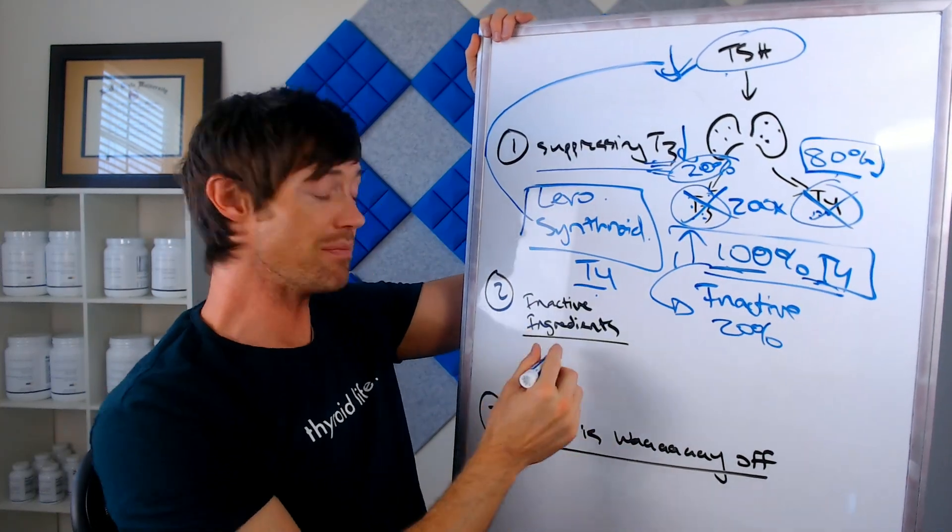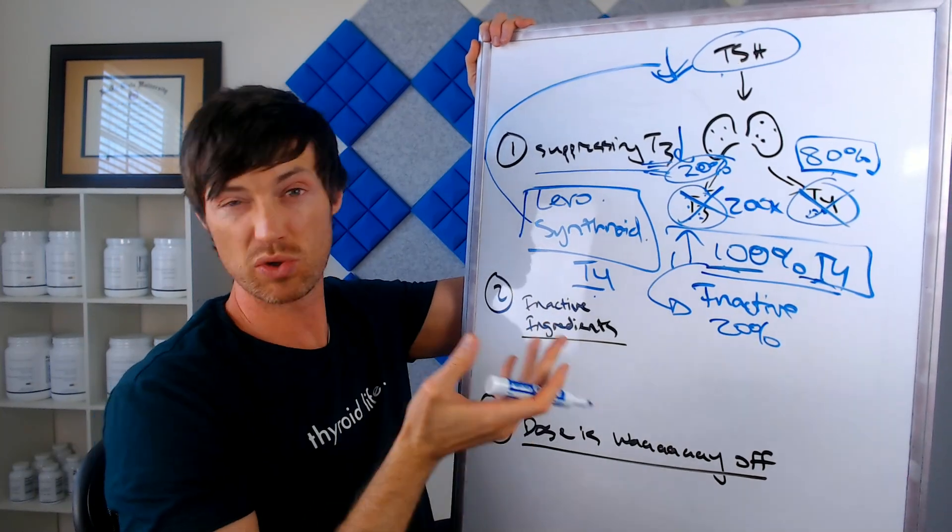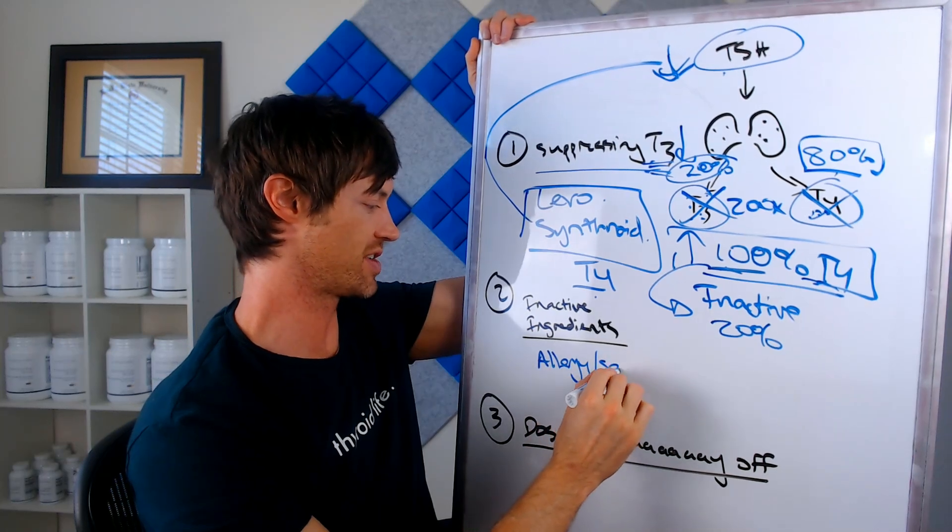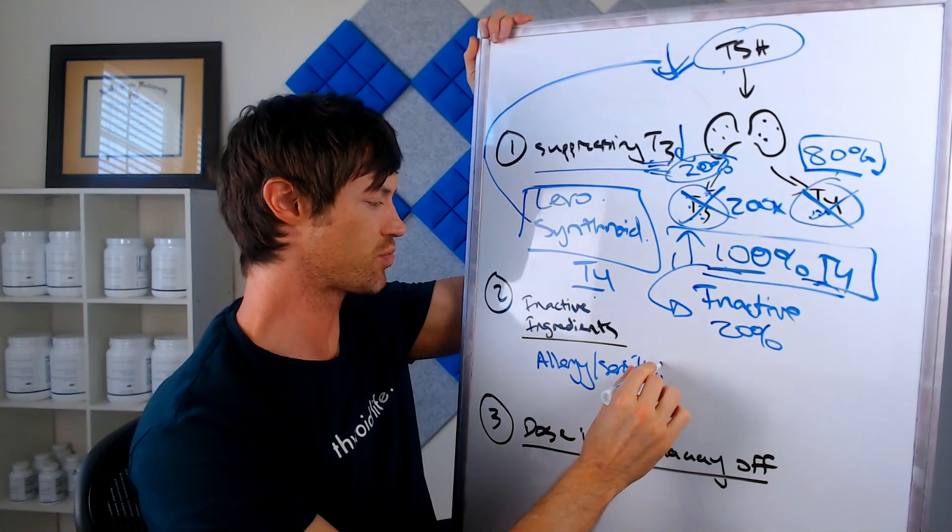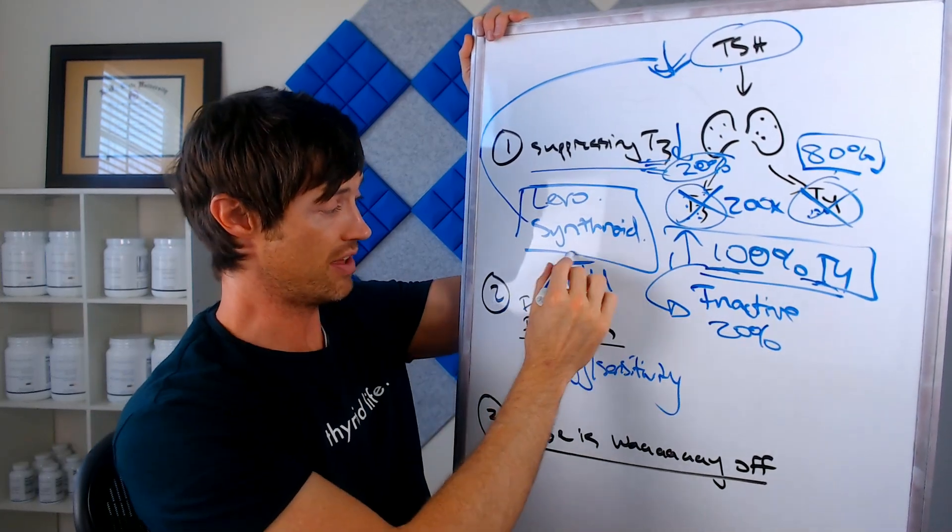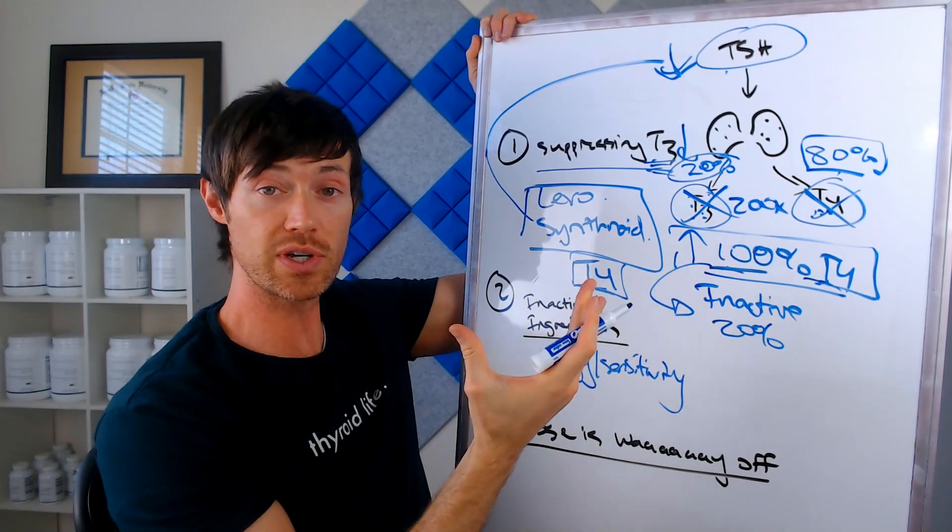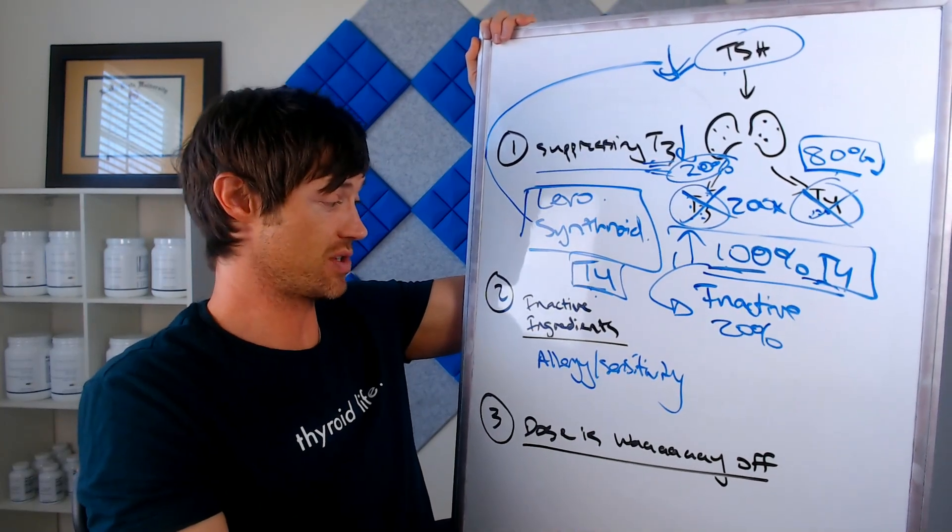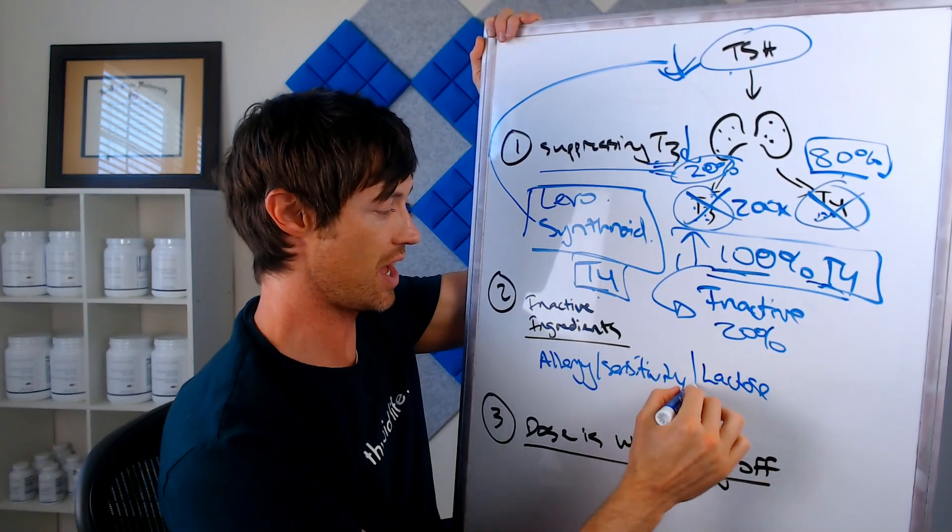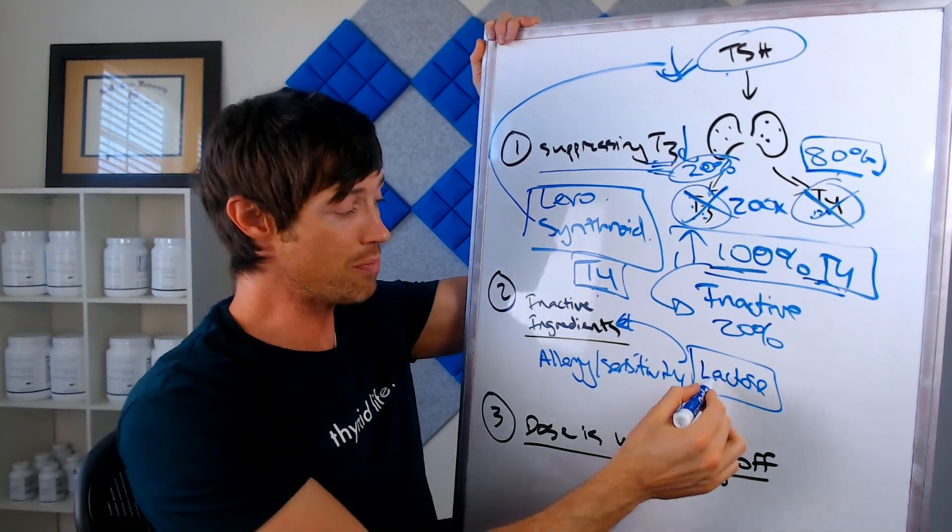Number two is that sometimes there are ingredients inside of the medication, which are inactive, which you can have sort of like an allergic reaction to. So we'll call it an allergy. It could kind of be considered a sensitivity because really what's happening is there are some ingredients that are inside of the medication itself, which are not the T4. This is the most active component in thyroid medications, such as levothyroxine and Synthroid, but they also contain inactive ingredients as well. And one of those ingredients is lactose. So lactose itself is found inside as an inactive ingredient in some of these medications.